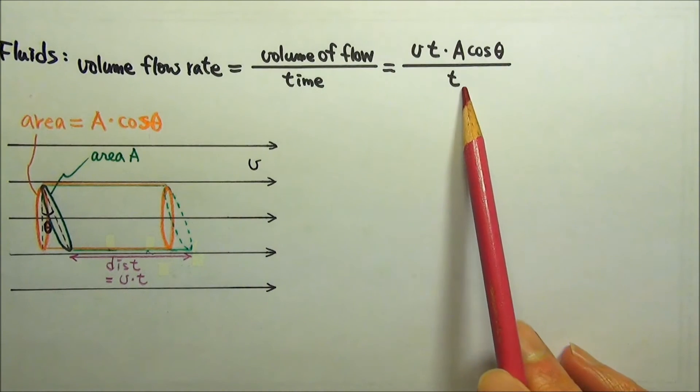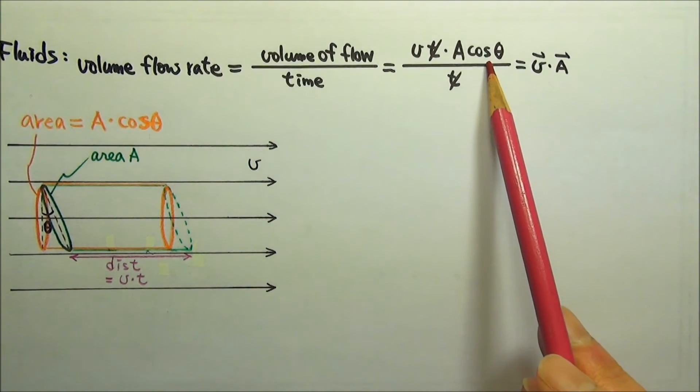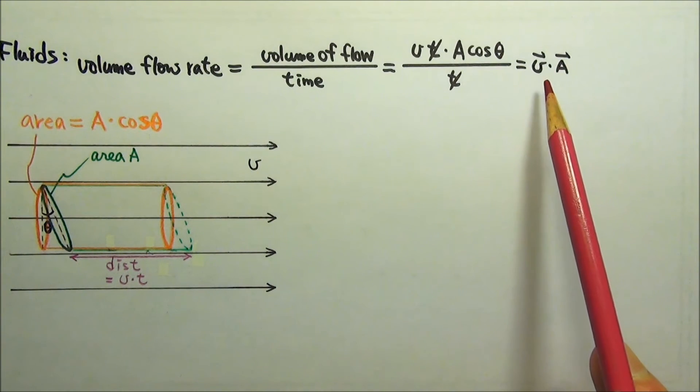Of course, the time is t. The t's cancel, so we have V times A times cosine theta, which is a dot product, V dot A.